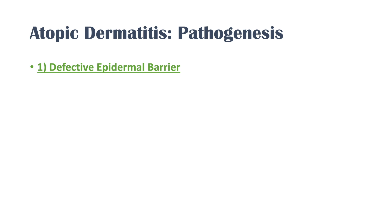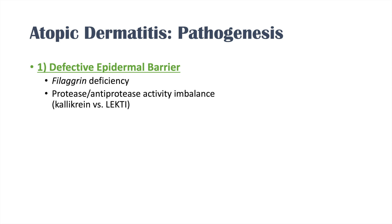The pathogenesis of atopic dermatitis involves two categories. The first is a defective epidermal barrier, related to a protein known as filaggrin — many cases have a filaggrin deficiency. There are also issues with protease/anti-protease activity imbalance, problems with the proteins calreticulin and LEKTI, and tight junction abnormalities in the skin, all contributing to a defective epidermal barrier.